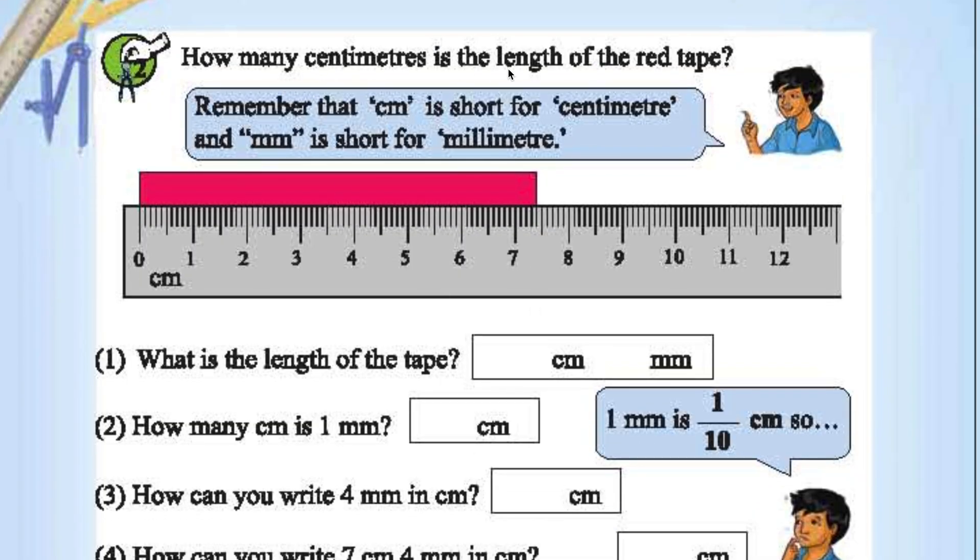How many centimeters is the length of the red tail? Started here up to fourth division after 7. So this is 1, 2, 3, 4, 0.4. 7 plus 0.4 is 7.4. 7.4 cm. Unit is cm.